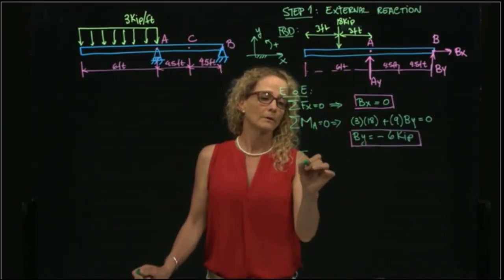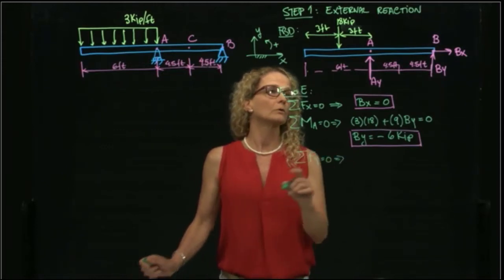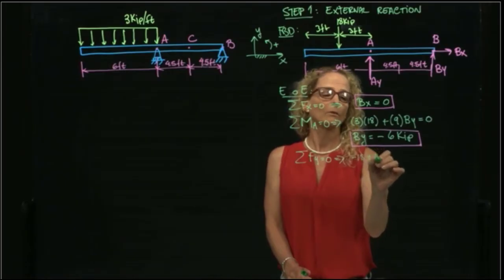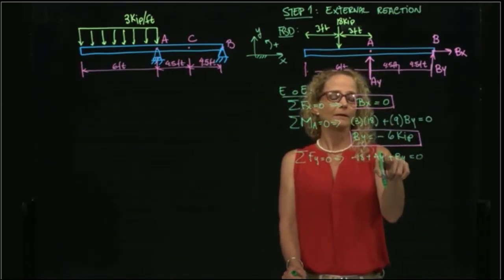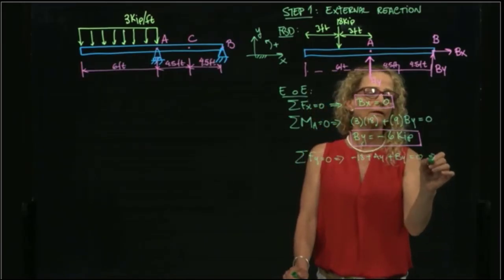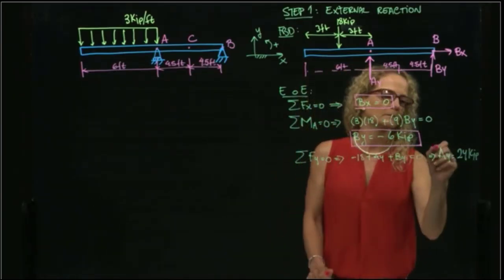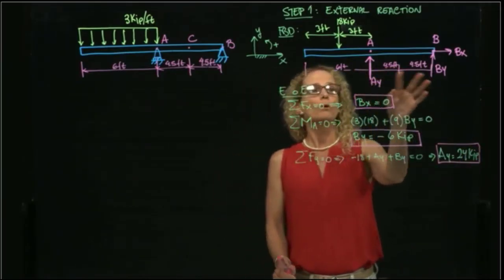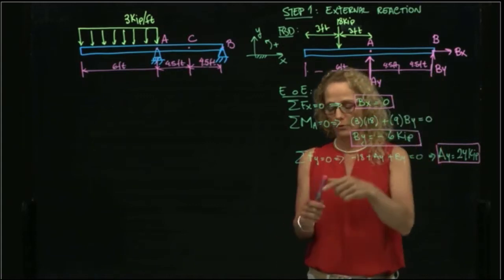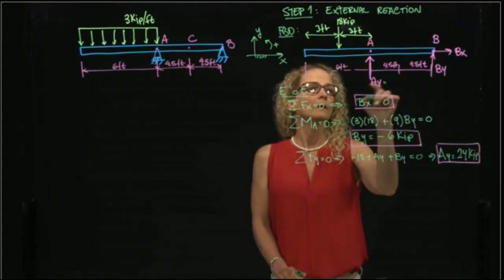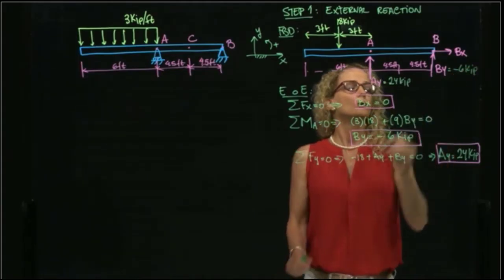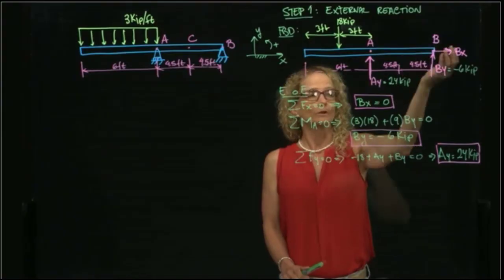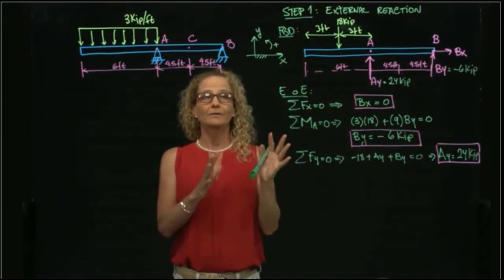And now I add forces in Y. And what do I get? I get negative 18 plus AY plus BY equals to 0, but already BY is negative 6. So if I place that here, negative 6, and I put that to the other side, I get that AY is 24 kip positive. So at the end, I put both forces as positive, but I got this to be negative. So I got the values for AY, which is 24 kip, and BY, which is negative 6 kip. So now that I have those values, it means that BY goes downwards, negative direction of Y.